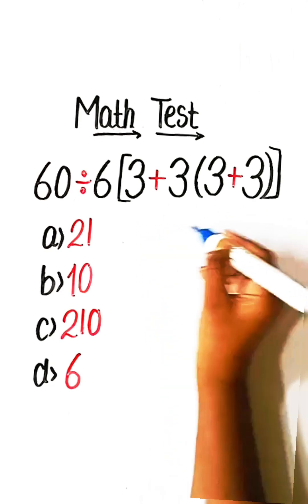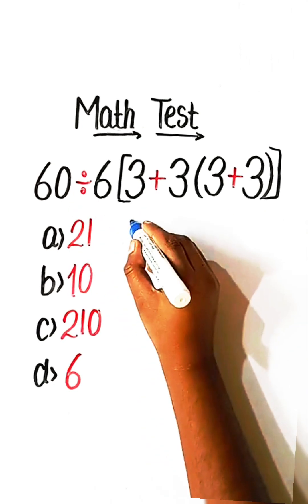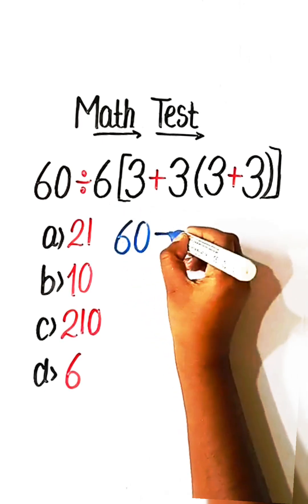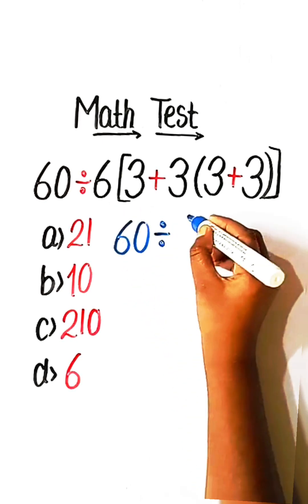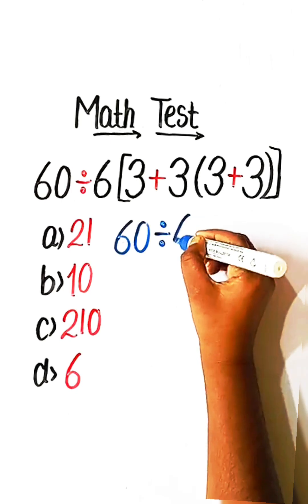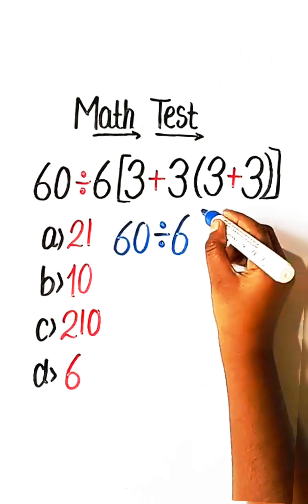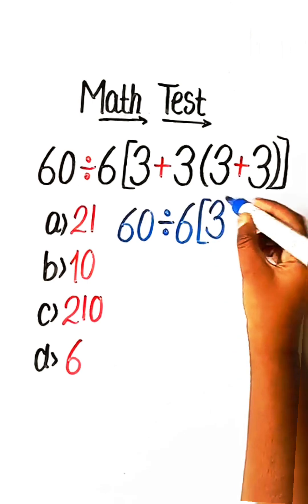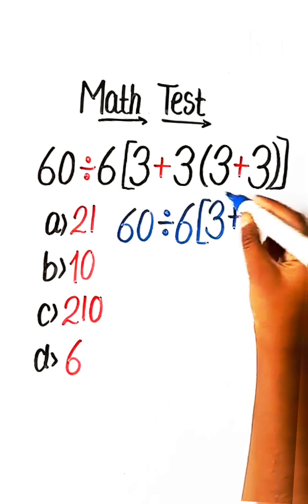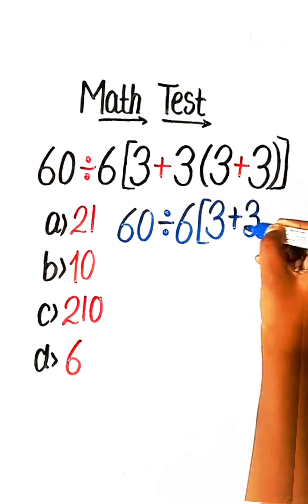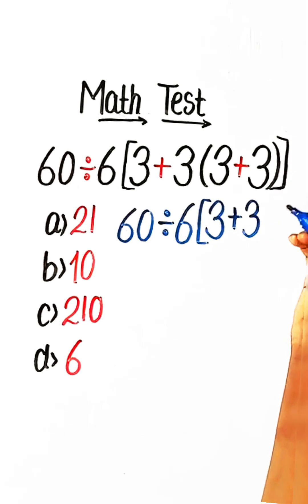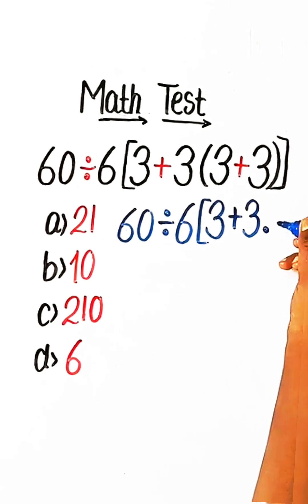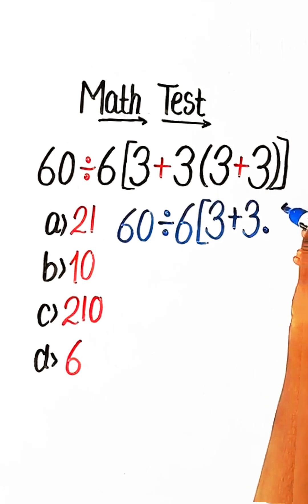First of all, we have to solve the bracket part. So 60 divided by 6, and 3 plus 3 is 6.